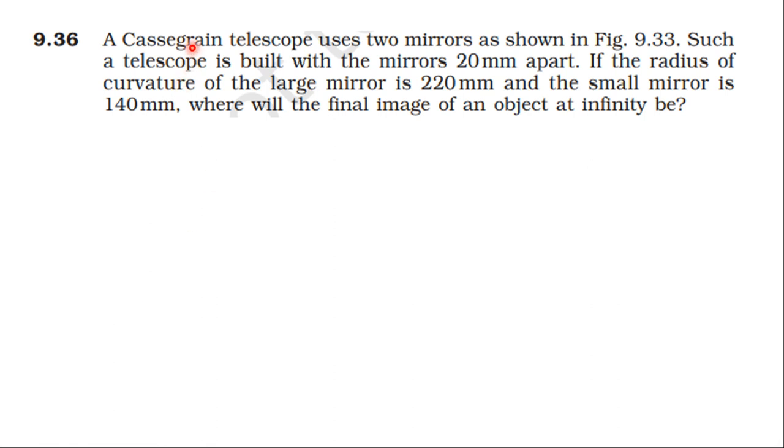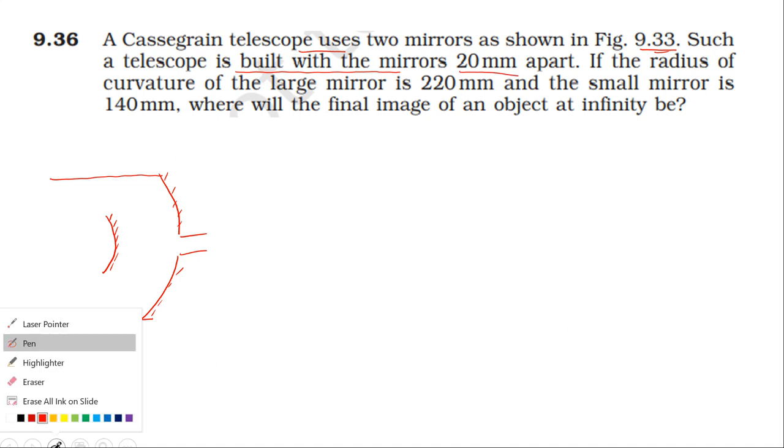This question is from the NCERT textbook, from the topic ray optics and optical instruments. Question 9.36 states: A Cassegrain telescope uses two mirrors as shown in Figure 9.33. The telescope is built with the two mirrors 20 millimeters apart.